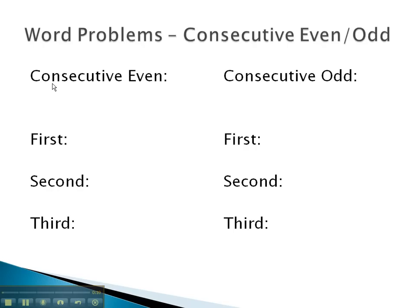As we consider even numbers, we must remember that the space between even numbers is 2. For example, 8, 10, and 12 are even numbers with a space of 2.